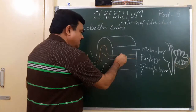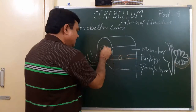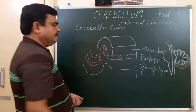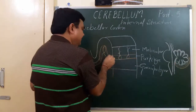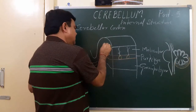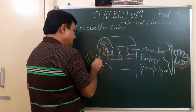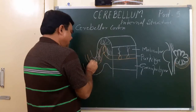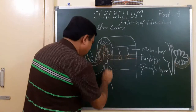The Purkinje layer has flask-like Purkinje cells. Here is a flask-like Purkinje cell. Here is the dendrite of the Purkinje cell. In this view, there is arborization of the dendrites. So these are the dendrites of the Purkinje cells. And here, this is the axon of the Purkinje cell.